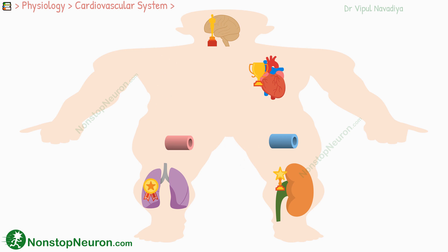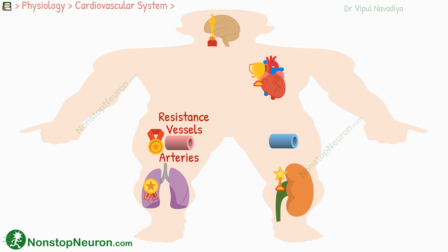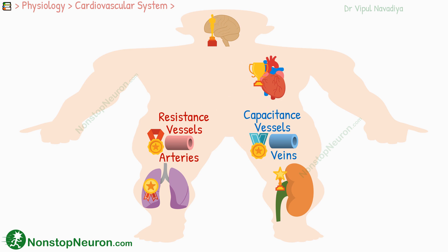That day, an award called Resistance Vessel was given to arteries, and another award called Capacitance Vessels was given to veins. You might already have heard these terms, but I'm pretty sure that you don't know all the factors that the judges took into account when deciding the winner. So allow me to surprise you with all the behind-the-scenes.